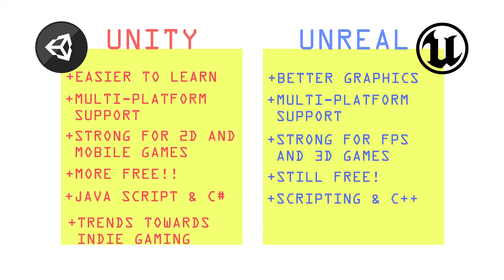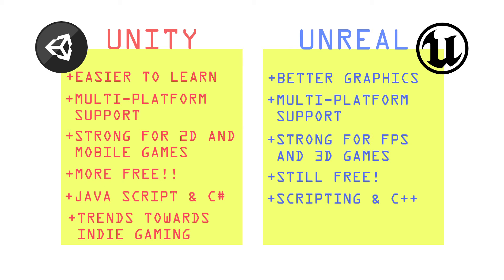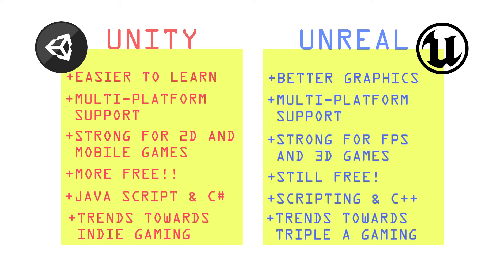Unity tends to trend towards indie games like Subnautica, Cuphead, Kerbal Space Program, Risk of Rain, and Overcooked. While Unreal Engine has that AAA feel — we're talking about Borderlands, Gears of War, Mass Effect, and Batman with some long title and another Batman something.